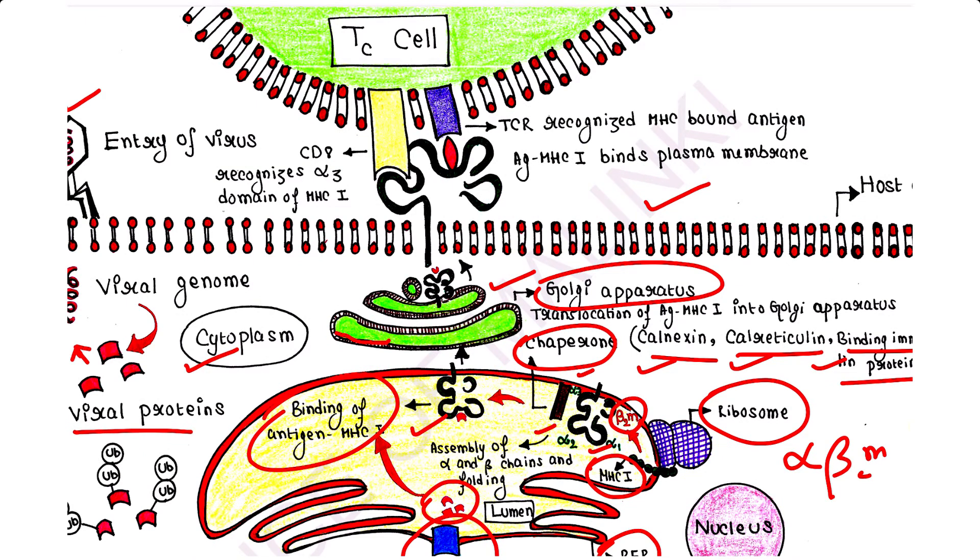Once this complex reaches the cell surface, this is the complex: antigen-MHC1. It binds the plasma membrane. Once this complex binds the plasma membrane, cytotoxic T cell or Tc cell can recognize it.